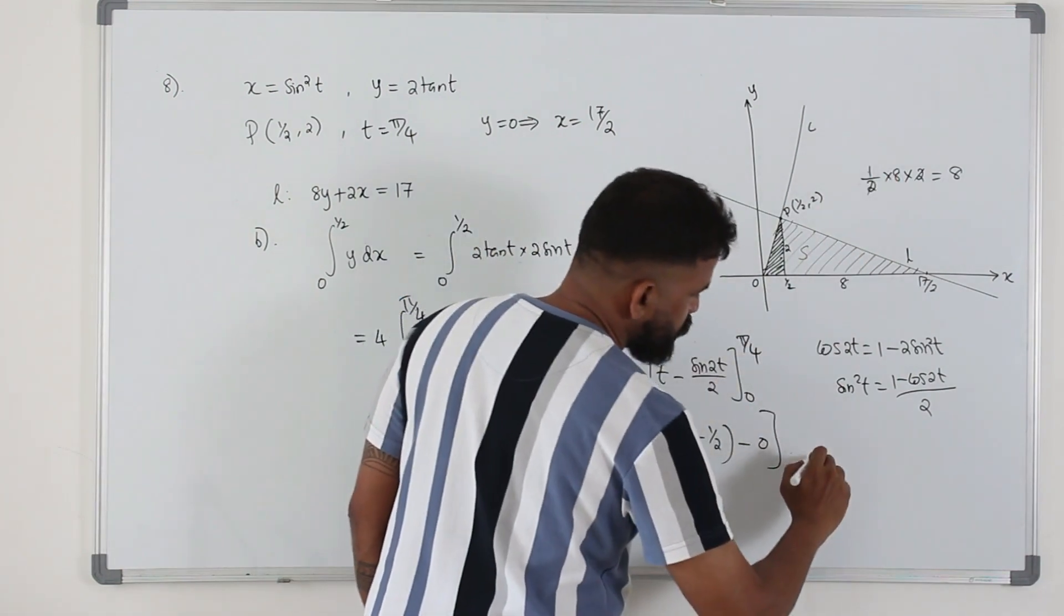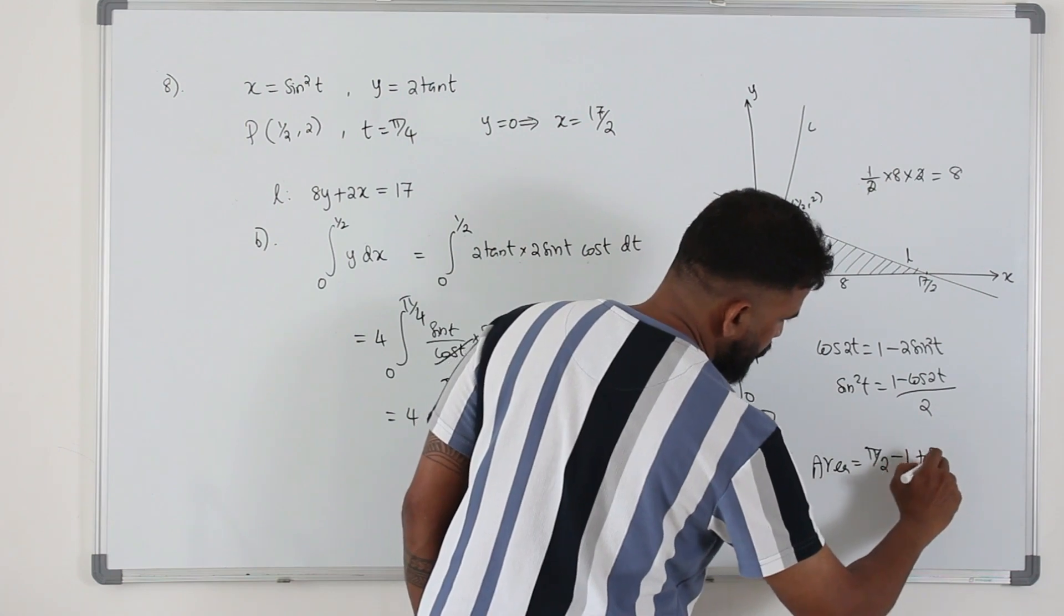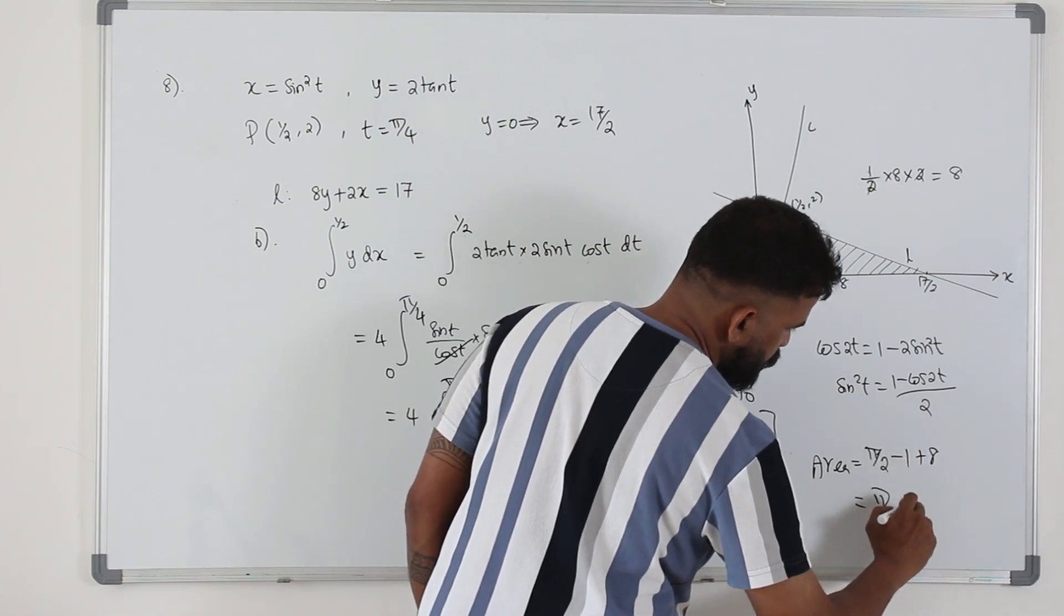Now you need to add these two areas. So the total area is pi over 2 minus 1 plus 8, which is pi over 2 plus 7.